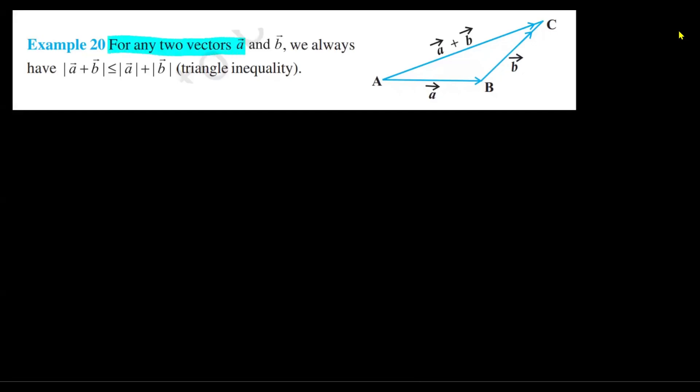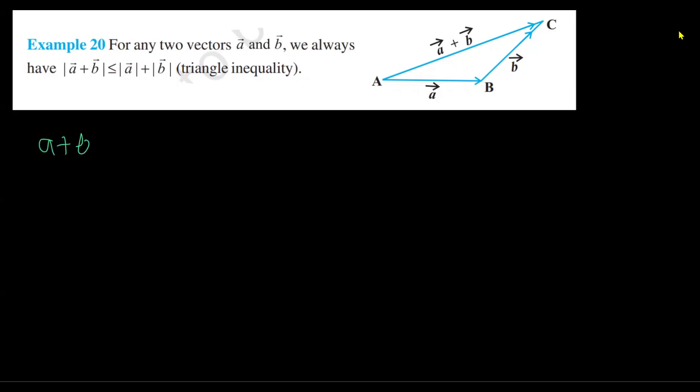The question says: for any two vectors a and b, we always have |a + b| ≤ |a| + |b|. That's the triangle inequality. Now this is what we need to prove here. I'll write |a + b|² — so what do we know?